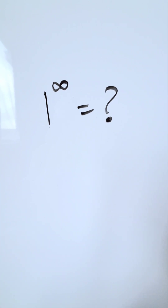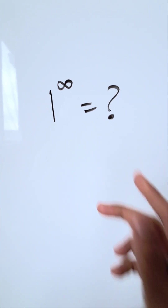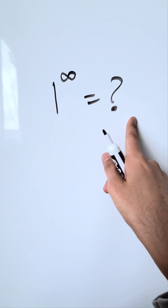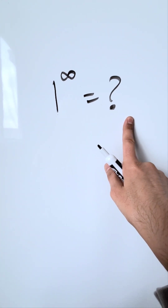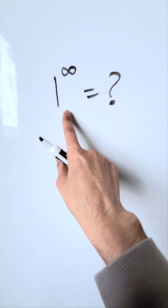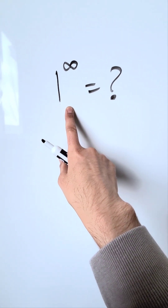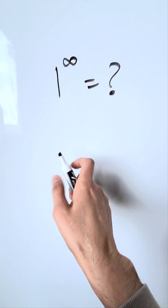Let's look at something interesting: 1 to the power of infinity. What does this evaluate to? How can I calculate this? Before I do that, let's determine how I even came to this step to begin with.